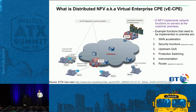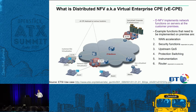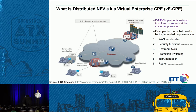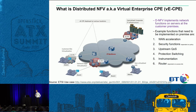So, distributed NFV — let me tell you a bit about it. Unfortunately it's known by various names, which is an indication of how early this technology is. Some people call it virtual enterprise CPE. In BT we call it virtual enterprise CPE because we're virtualizing the CPE that belongs to enterprise customers. Some people also call it universal CPE or UCPE — it's a server you put on the customer premise that you run virtual appliances on: things like firewalls, routers, other gateway functions, WAN accelerators, security functions.